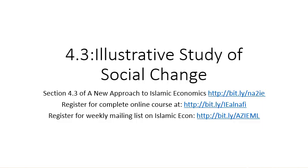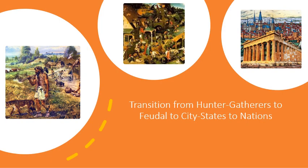In the previous section of chapter 4 we studied methodology for social change. In this section we will give some examples to illustrate this methodology. In particular, we look at the transition from hunter-gatherers to feudal societies to city-states to nations.